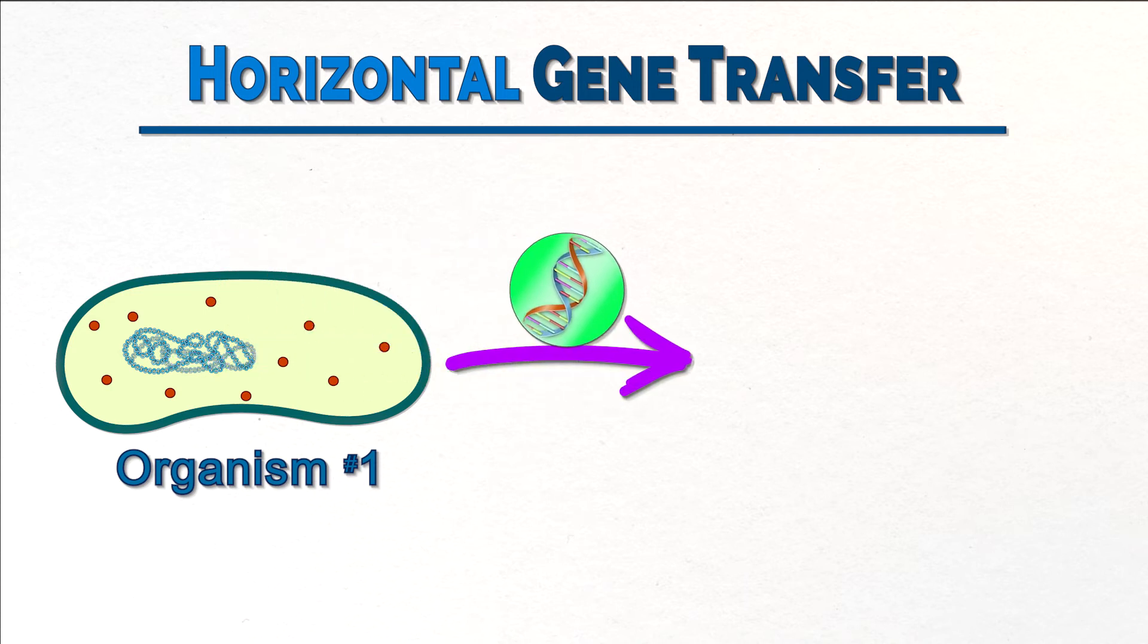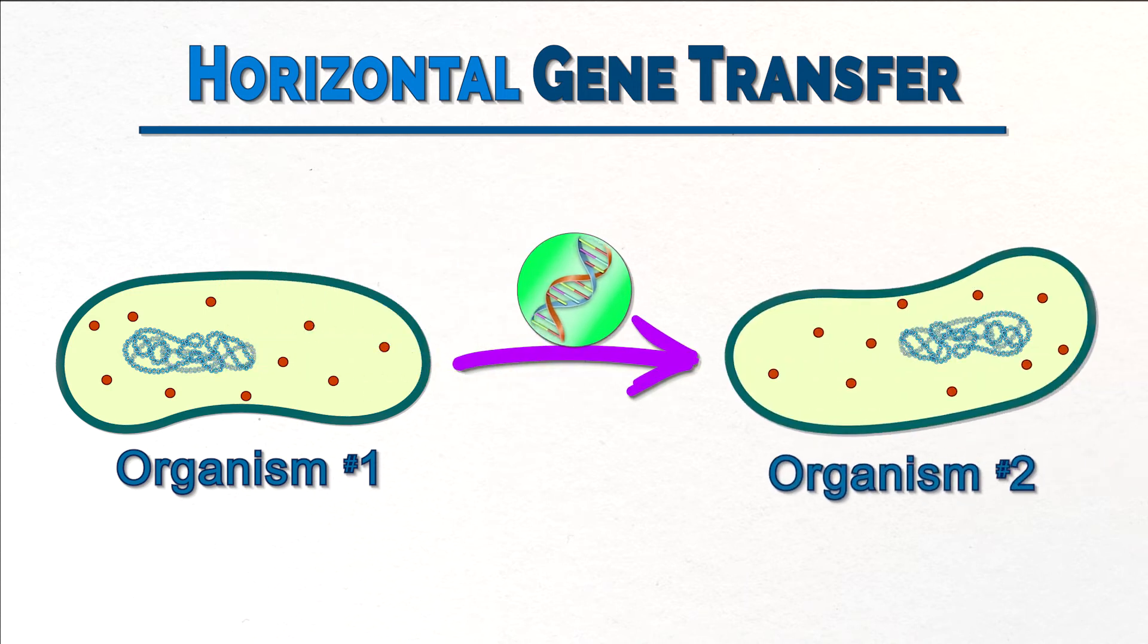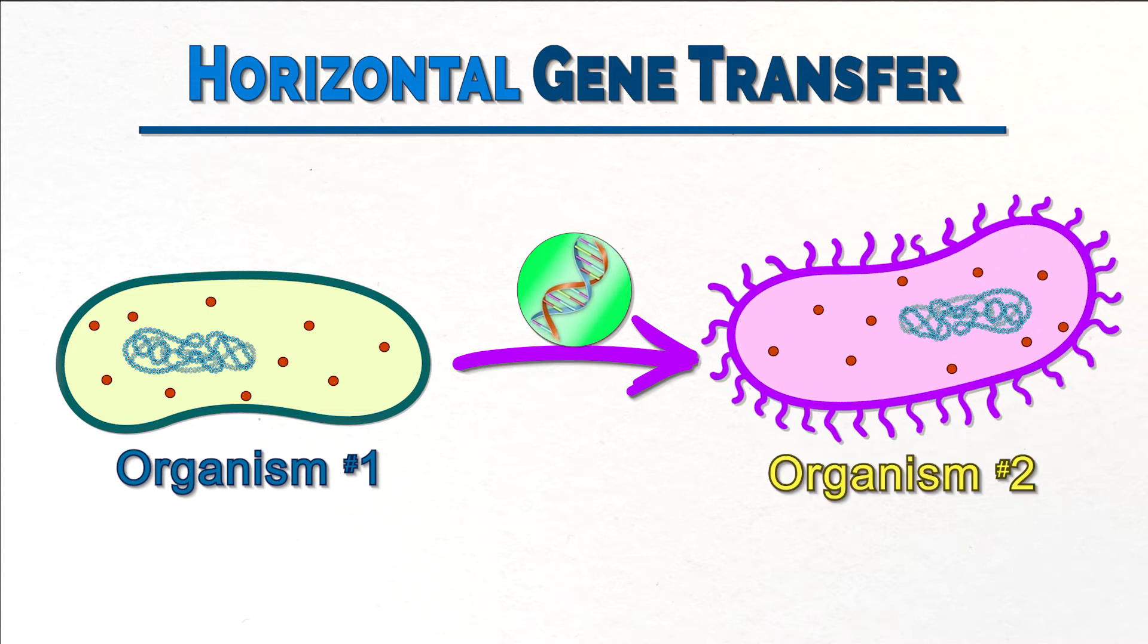Horizontal gene transfer is one organism sharing genetic information with another already existing organism. And yes, both organisms don't even have to be the same species.